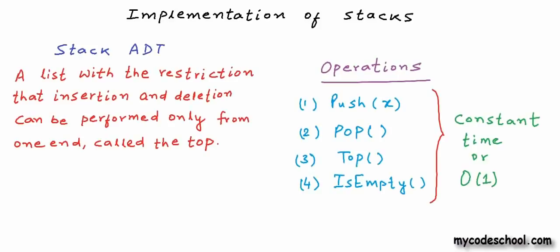In our previous lesson we introduced you to the stack data structure. We talked about stack as an abstract data type or ADT. When we define a data structure as abstract data type, we define it as a mathematical or logical model — we define only the features or operations available with the data structure and do not bother about implementation.